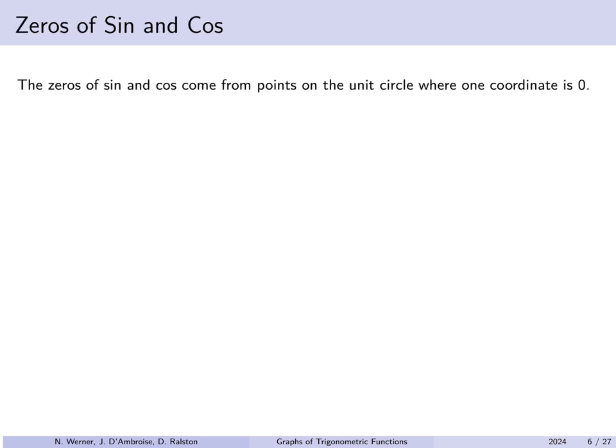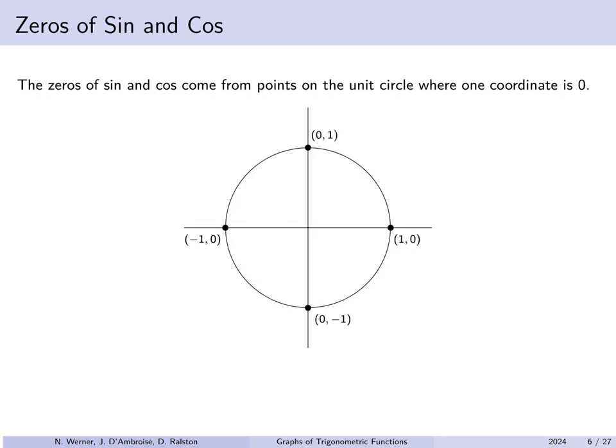The zeros of sine and cosine come from points on the unit circle where one of the coordinates is 0. Here's the unit circle with intersections with the horizontal line y = 0 and the vertical line x = 0 marked. At certain points the vertical coordinate is 0, so the sine function assigns a 0 to those inputs. Whereas at other points the horizontal coordinate is 0, so cosine assigns a 0 to those inputs.